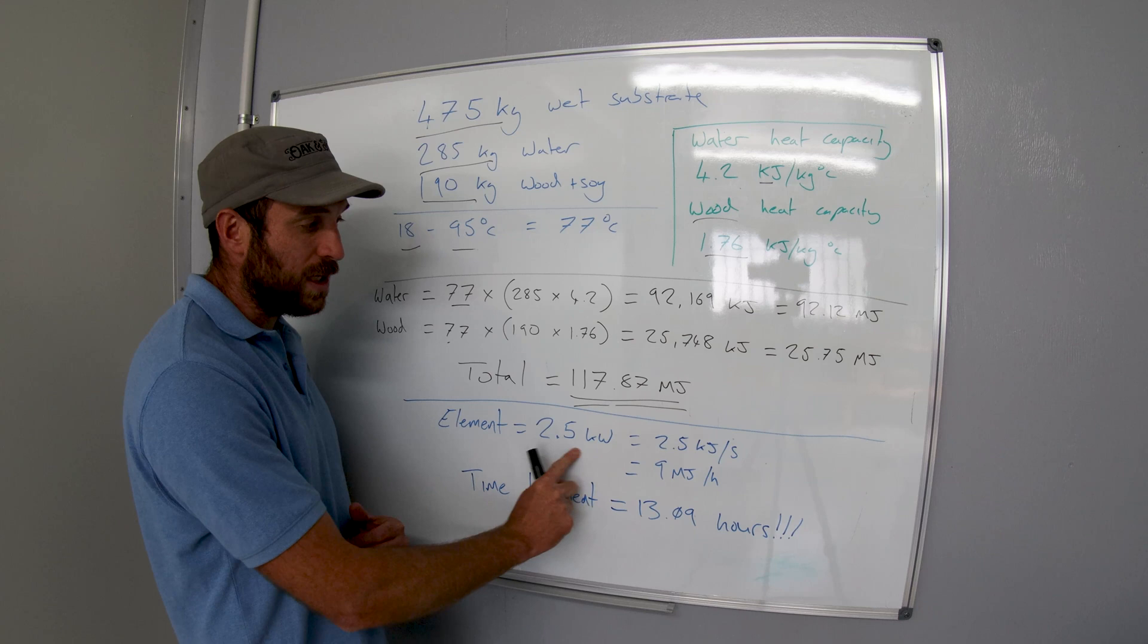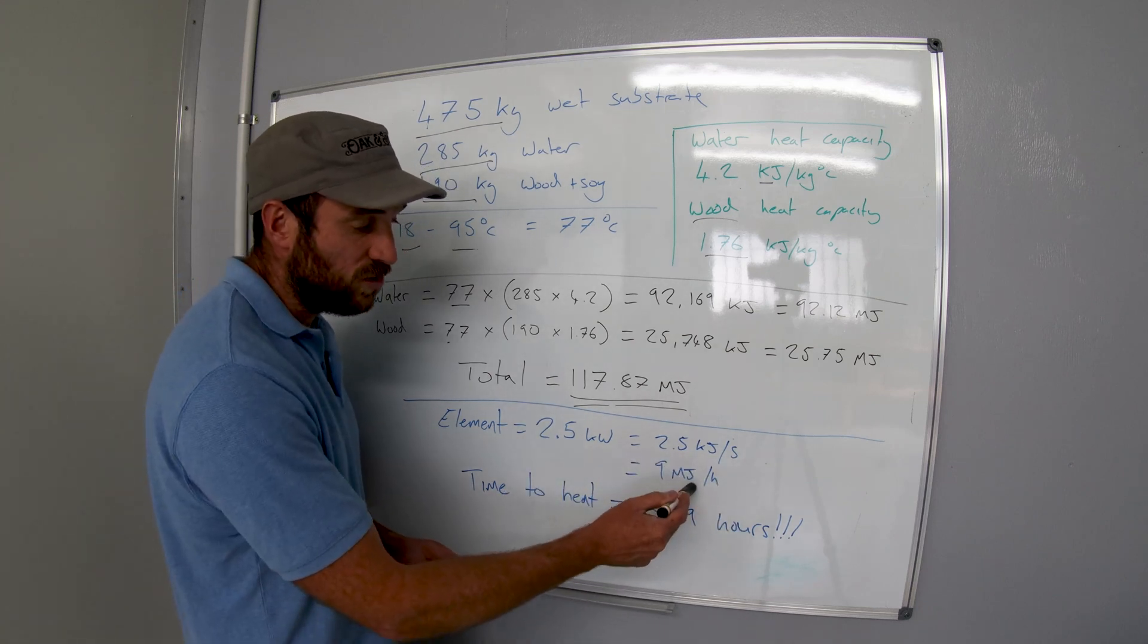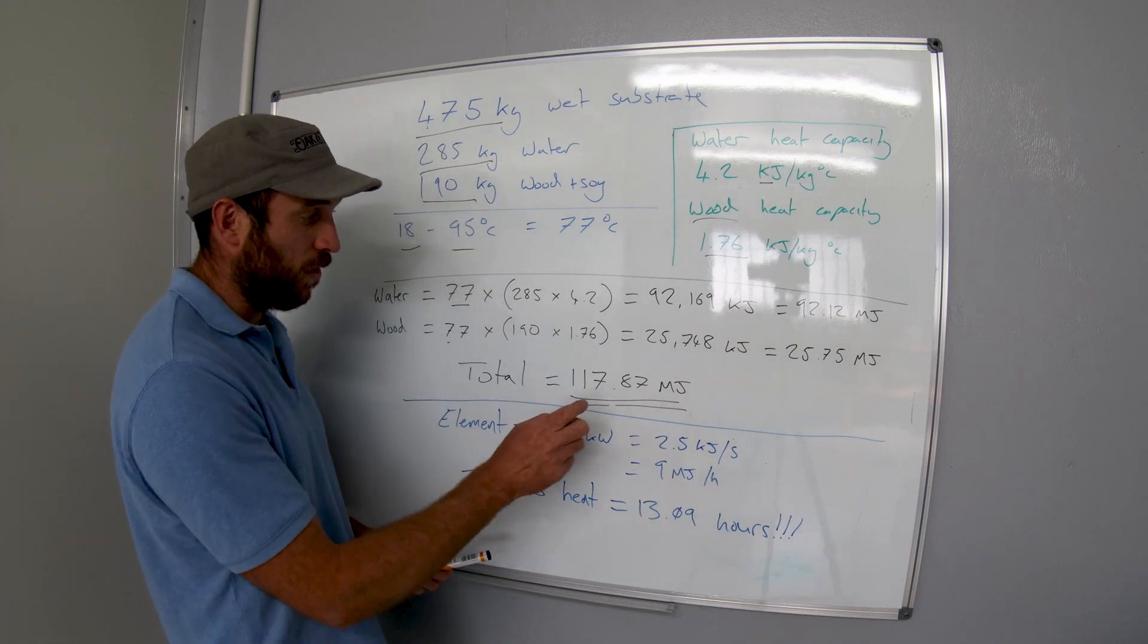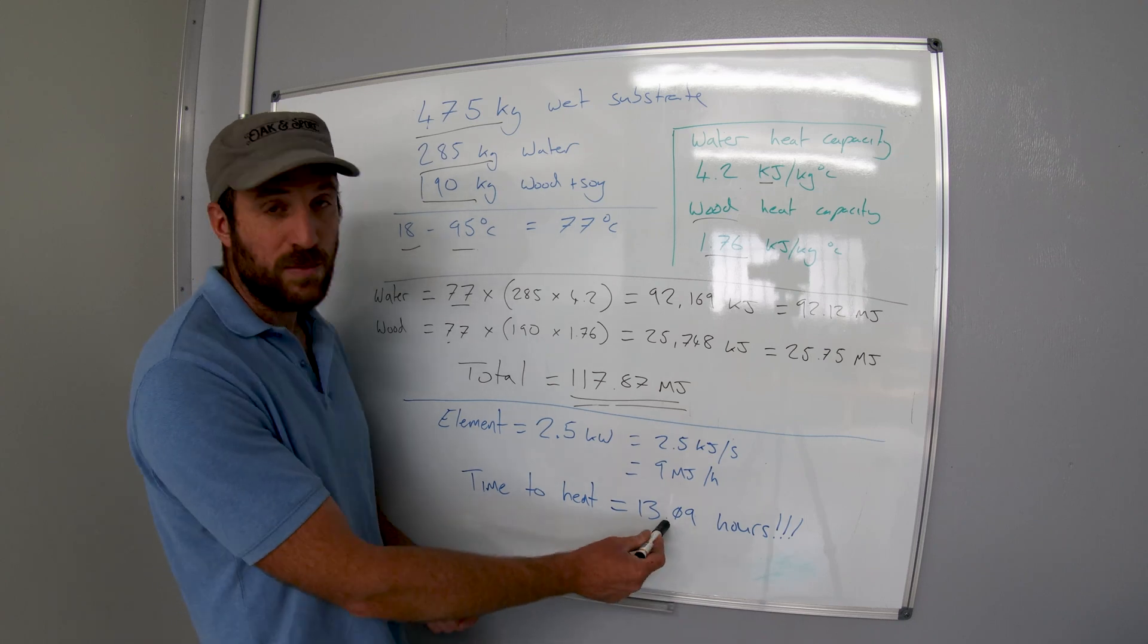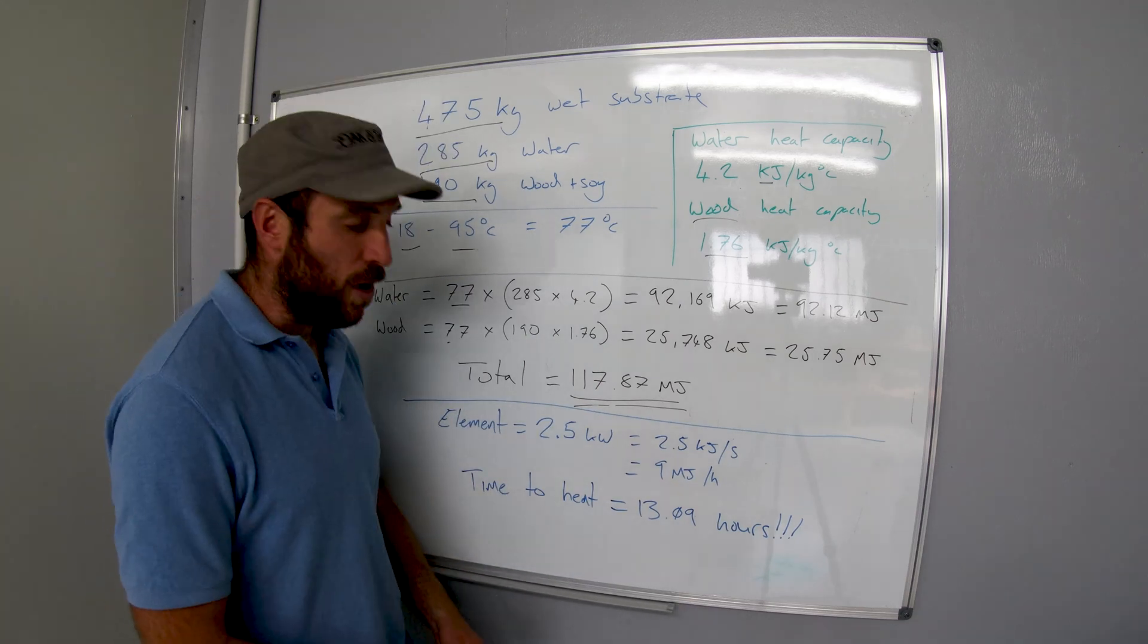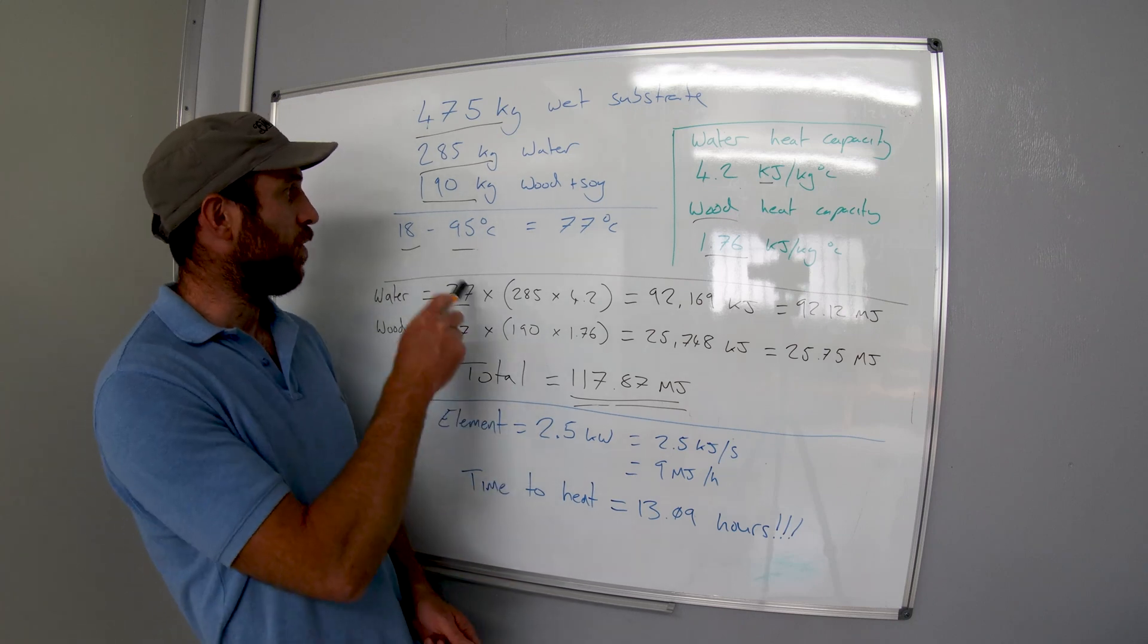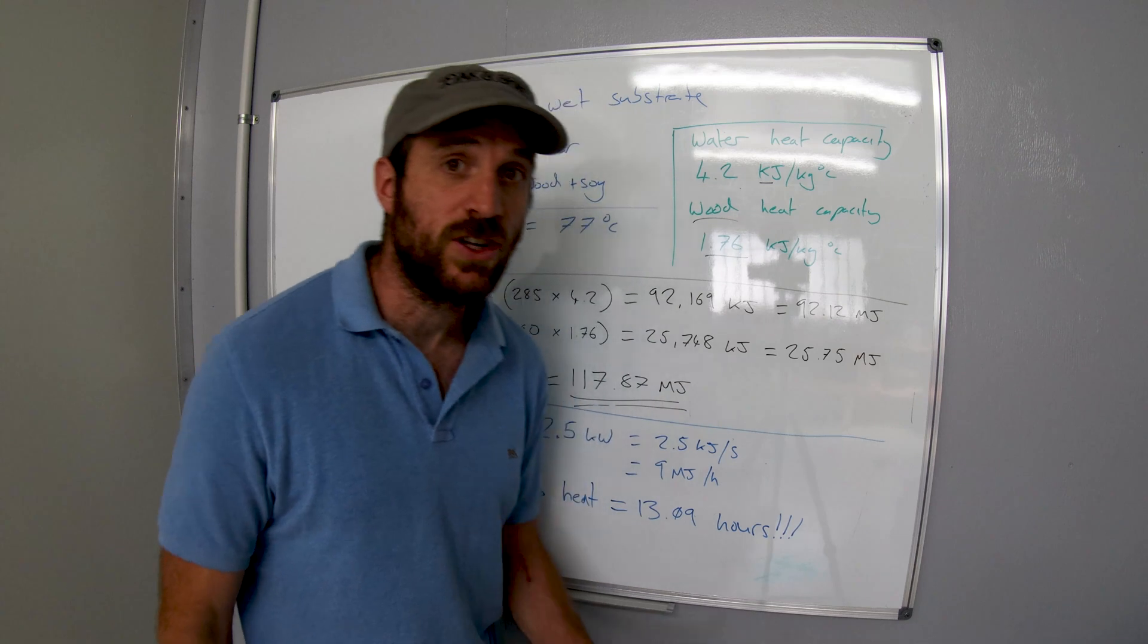Now my element is a 2.5 kilowatt element which gives me 2.5 kilojoules per second which equals 9 megajoules per hour, and we can simply then divide this by 9 megajoules per hour and it gives us 13.09 hours. So it's going to take my 2.5 kilowatt element 13 hours to heat my substrate up from 18 to 95 degrees.